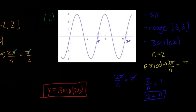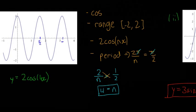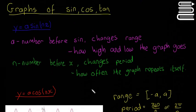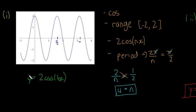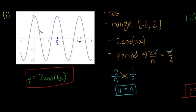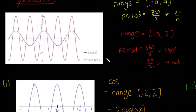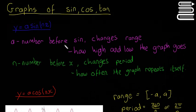Hopefully that all made sense. You should now be able to tell the difference between sine and cos, understand what happens when you put a number before the function or before the x, and look at a graph to work out the formula. The tricky bit is finding n, but sometimes you can tell straight away just by looking. Next time we're going to start looking at the unit circle.